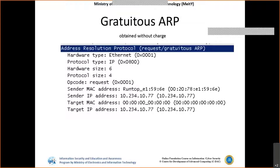There is one more thing called gratuitous ARP. This is used whenever a system starts up — it sends ARP packets to advertise that a particular IP address is already allocated to it. The system makes this gratuitous ARP so that all systems are notified that a particular MAC address already has a particular IP associated with it.